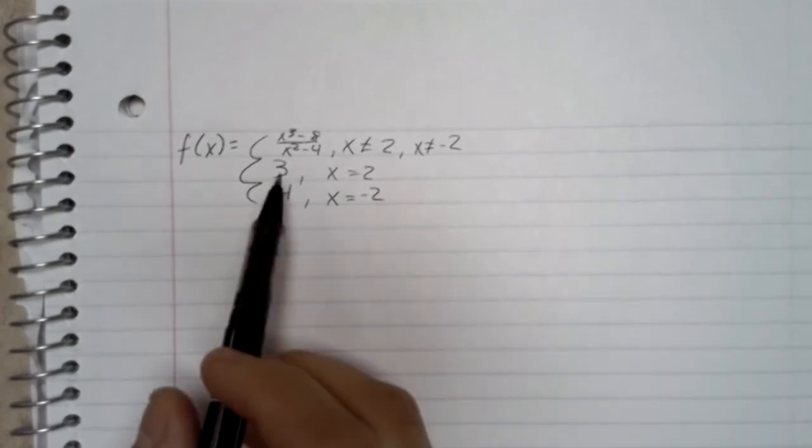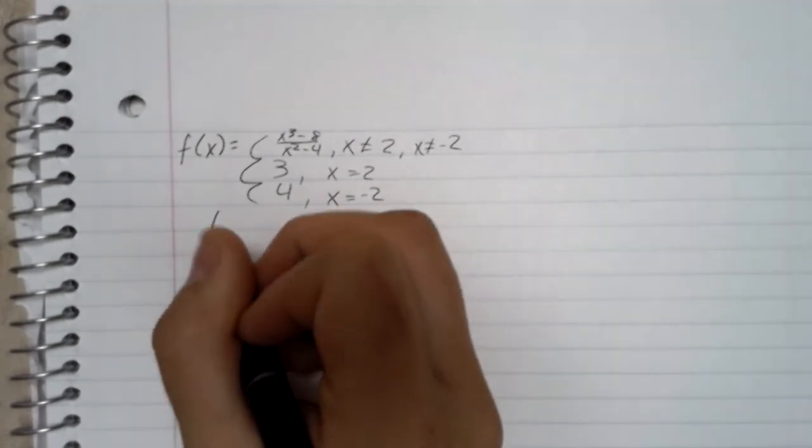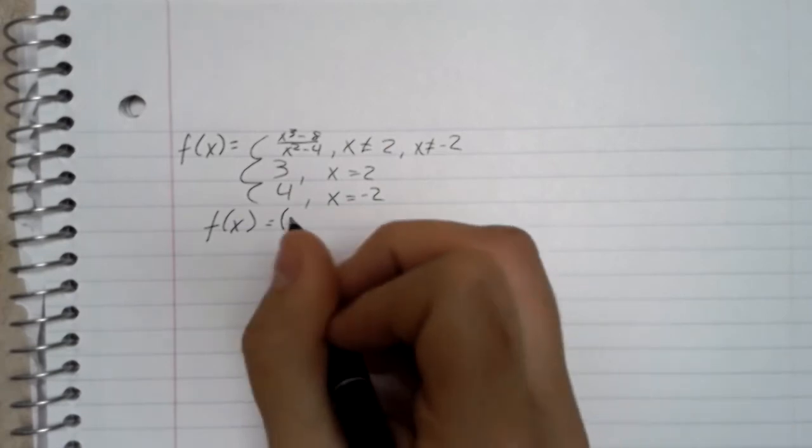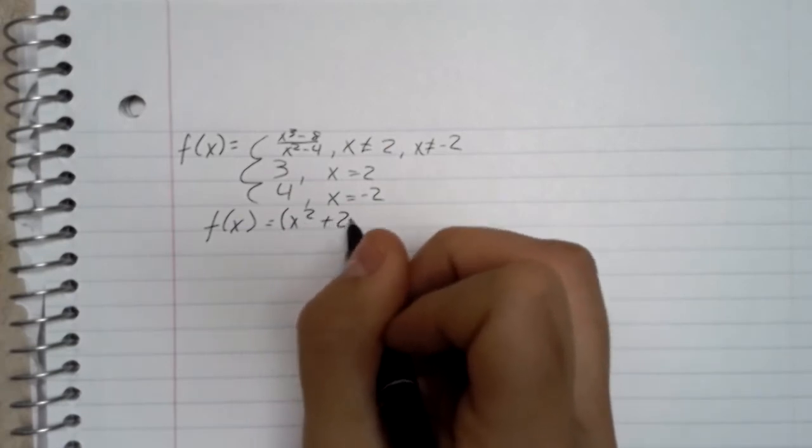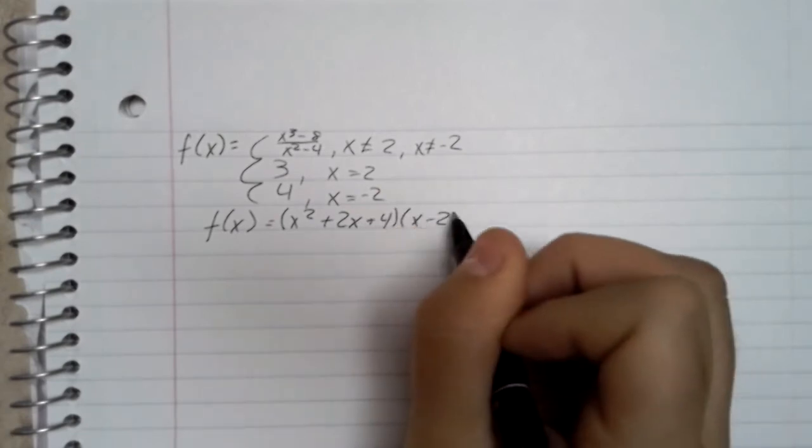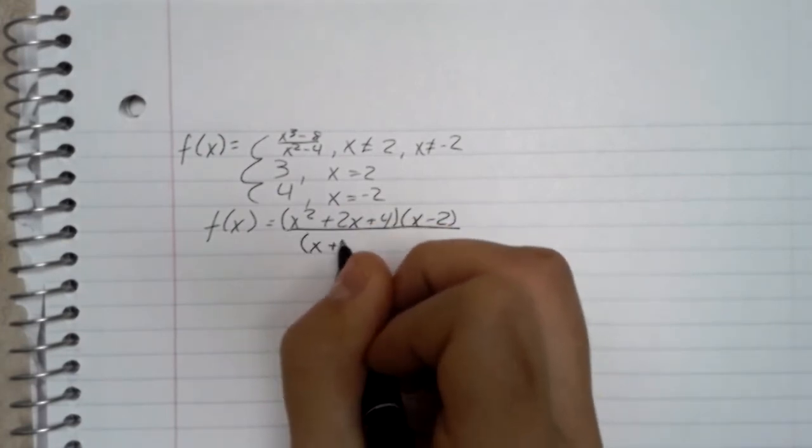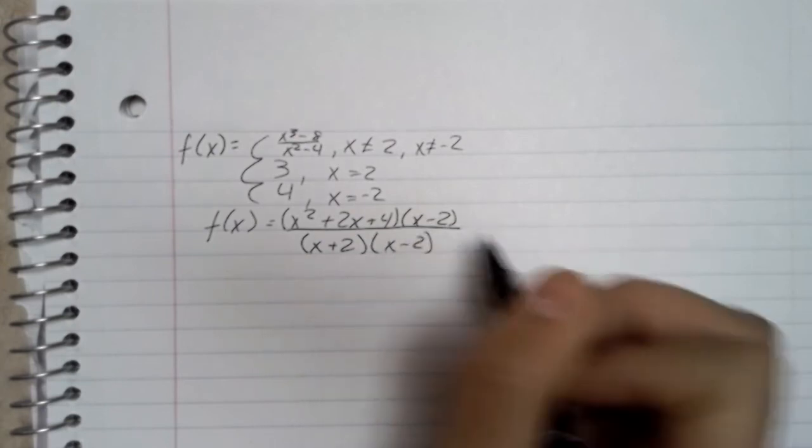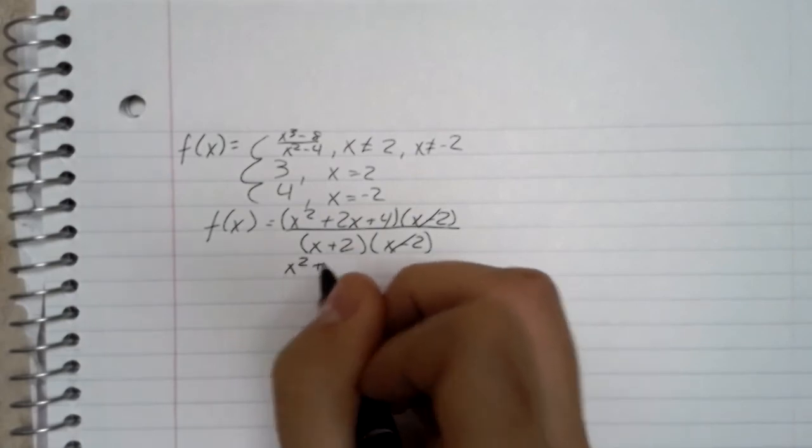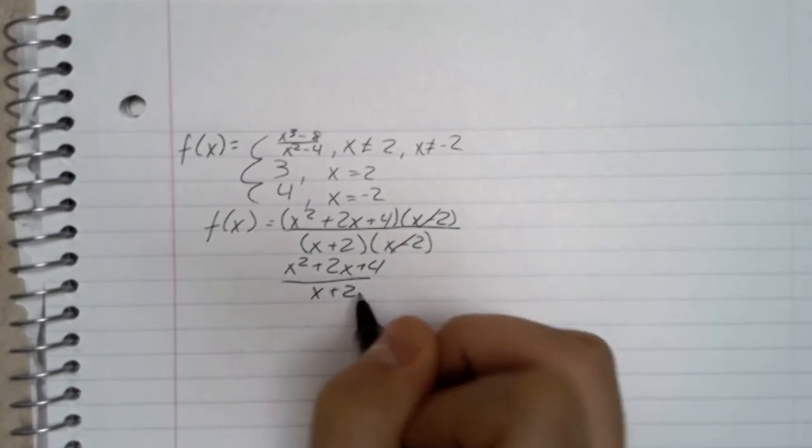So then I start out with the first function and factoring that. Through trial and error I found that it factors down to x squared plus 2x plus 4 times x minus 2 and then over x minus, or x plus 2, x minus 2. Then these will cancel out and then you're left with x squared plus 2x plus 4 over x plus 2.